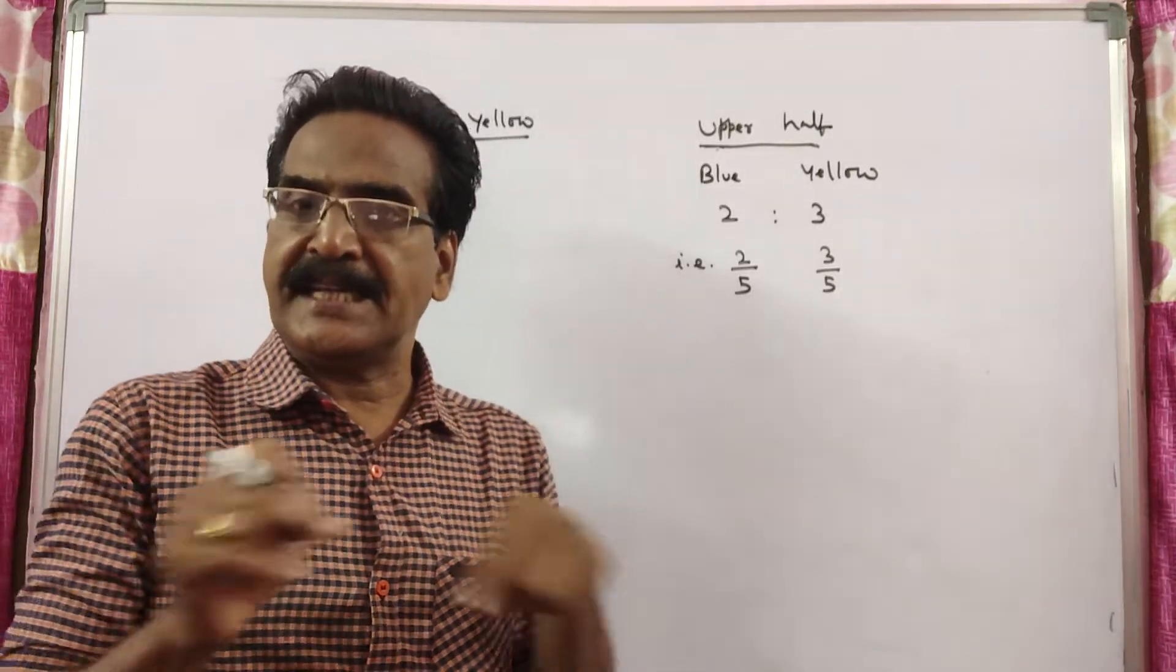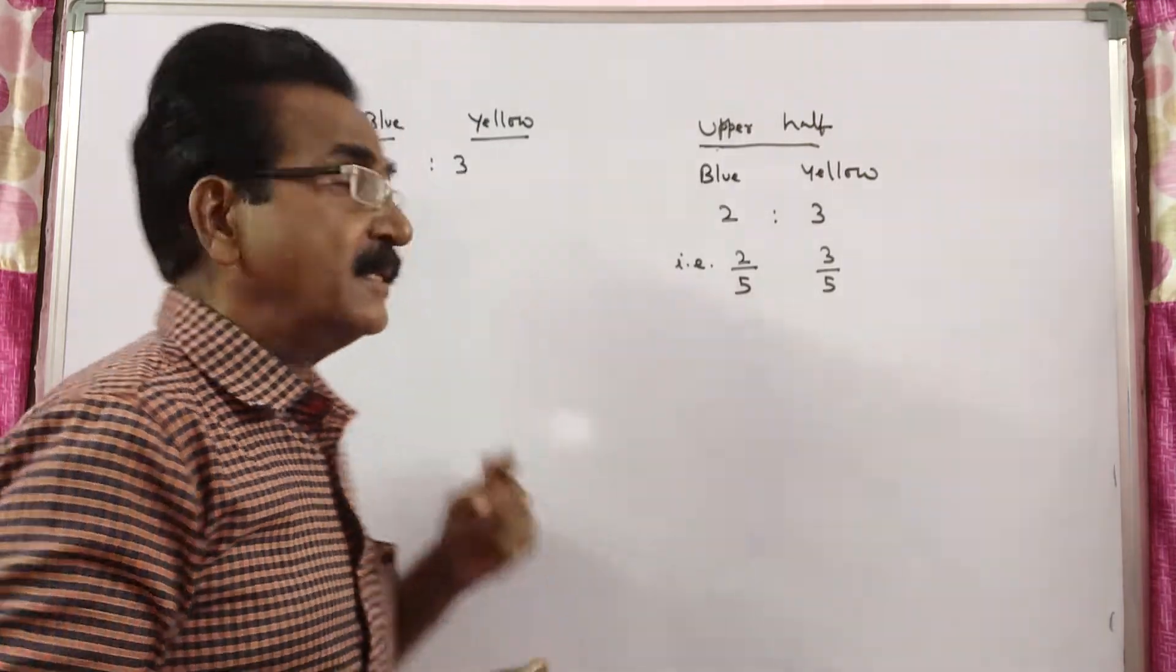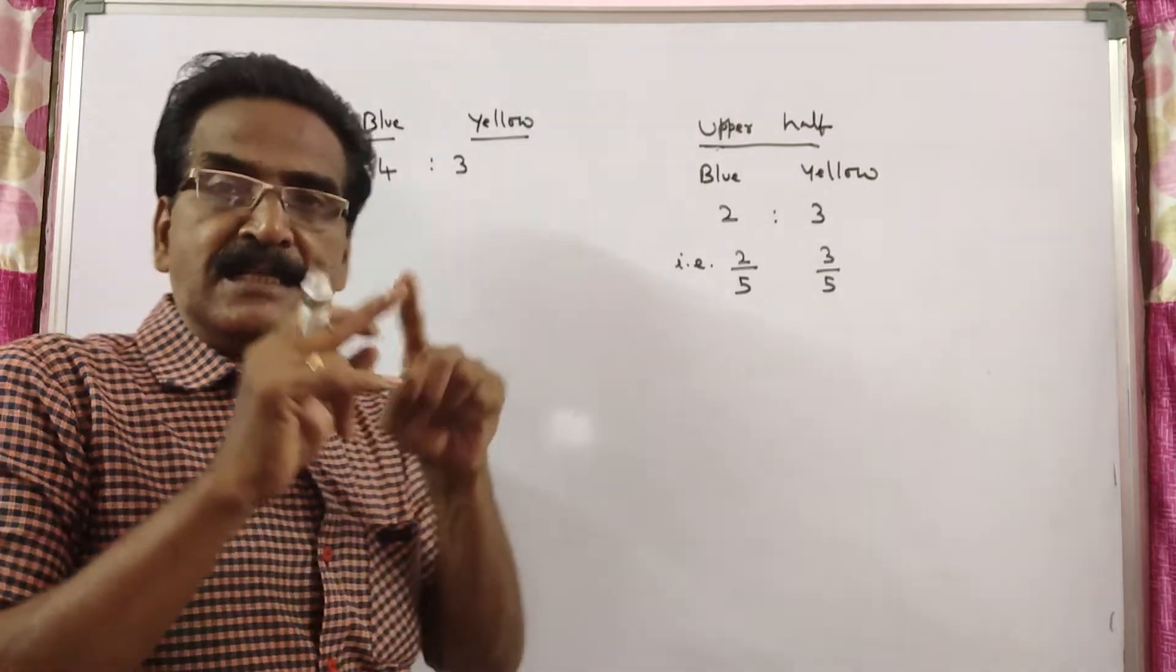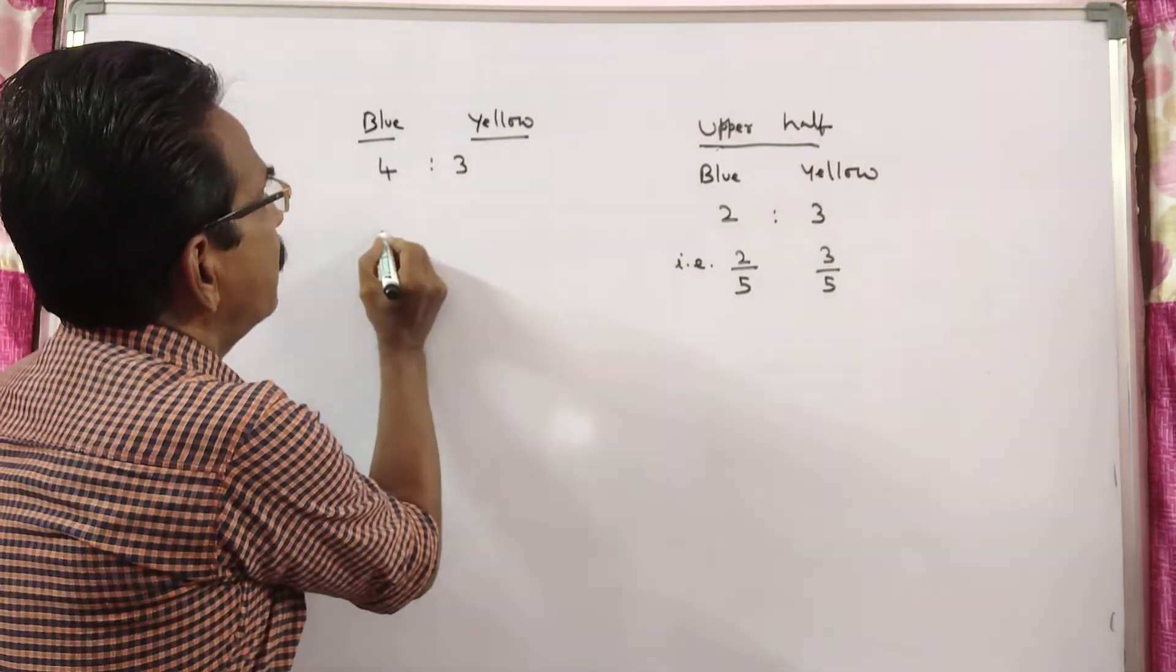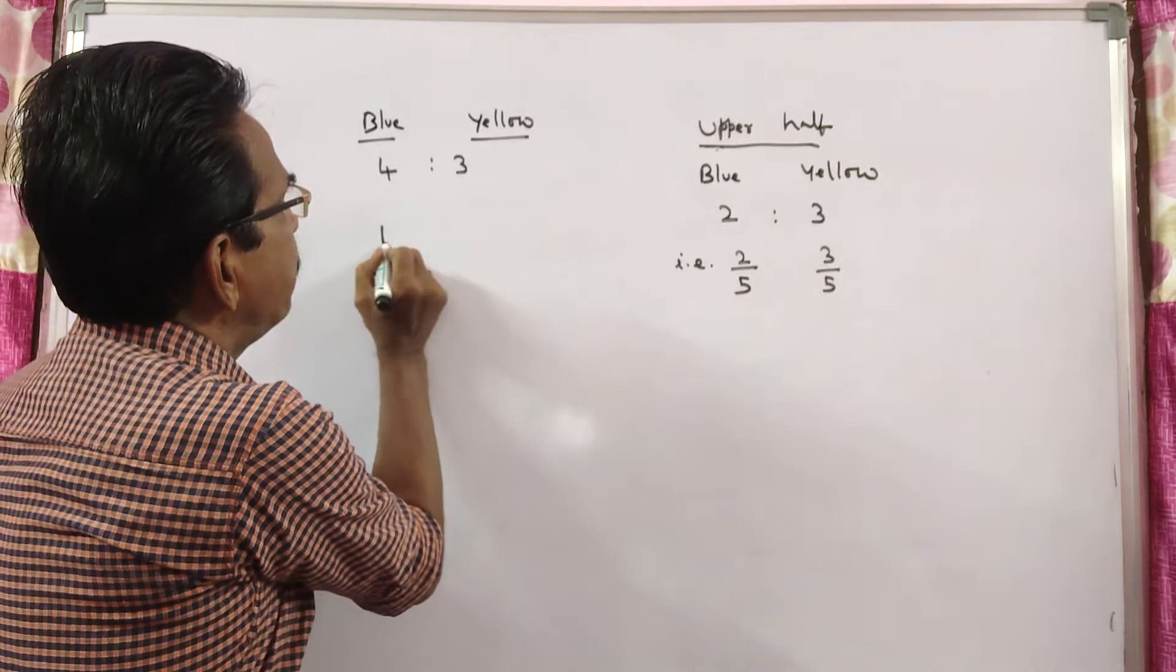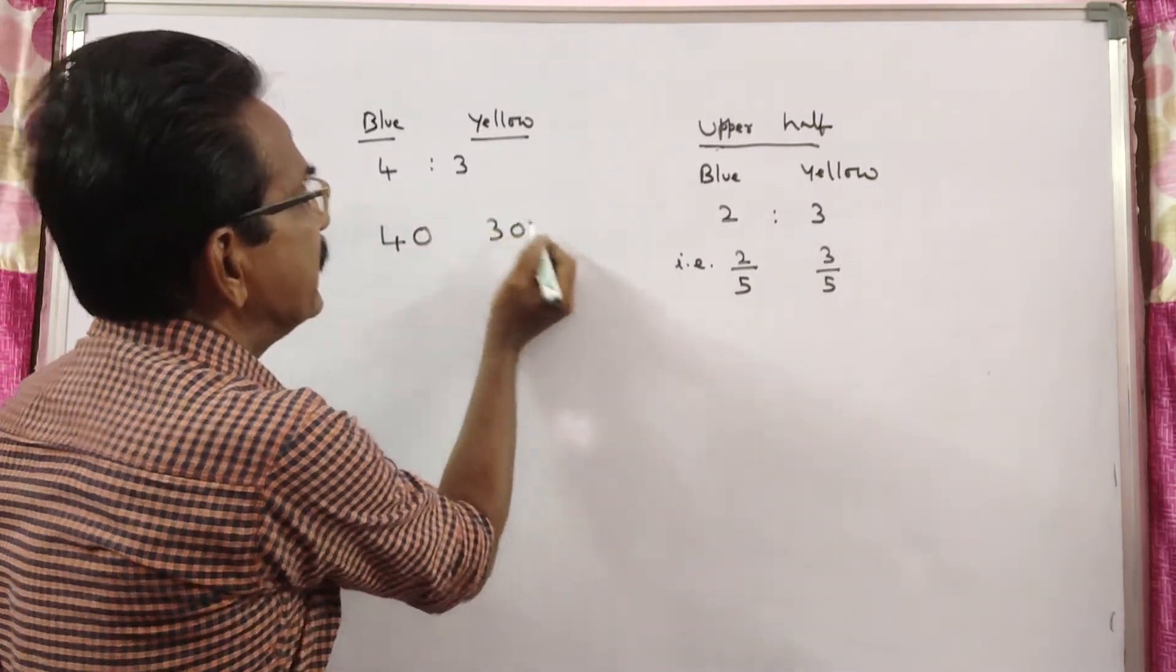And the total area of the picture is 70 units, of course square units. Total area 70 square units. That means 40 units are painted blue and 30 units are painted yellow.